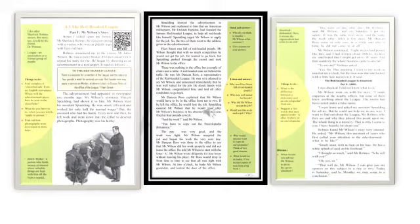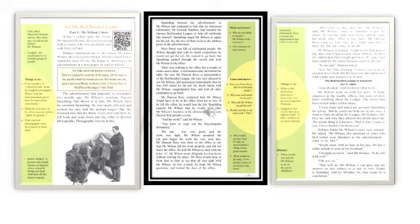Then suddenly the whole business came to an end. Holmes asked: 'To an end?' 'Yes, sir,' Wilson replied. 'This morning I went to my work as usual at 10 o'clock, but the door was shut and locked, with a little note nailed on it. It said: The Red-Headed League is dissolved. October 9, 1890.' Mr. Wilson was shocked and did not know what to do. He made inquiries at nearby offices, but none of them knew anything about the league. The rooms had been rented under a false name.